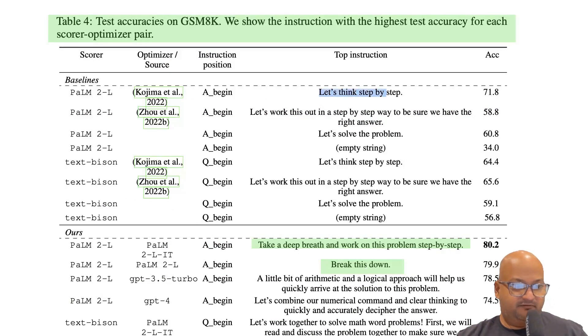And by now we're all familiar with the famous chain of thought prompt, which says let's think step by step. However, with this prompt optimization method, they were able to come up with a couple of new prompts that get better performance than the default chain of thought prompt.